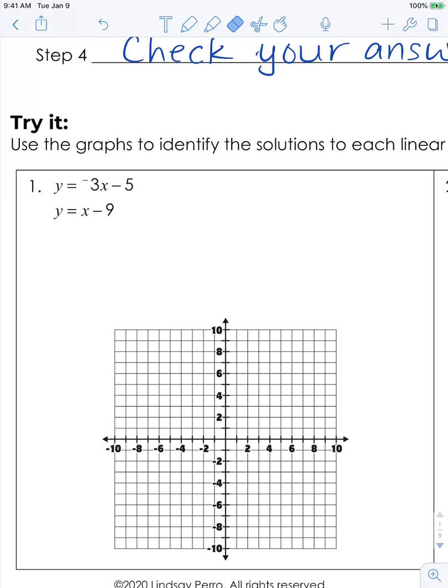We have a y-intercept of negative 5 and a slope of negative 3. So we're going to come to negative 5, and then I'm going to go down 3 over 1 for my next point. I always think it's a good idea to have multiple points, especially with systems, because you want to make sure you're accurate with your line. So we're going to go ahead and connect these points.